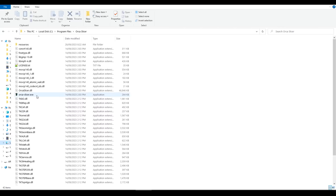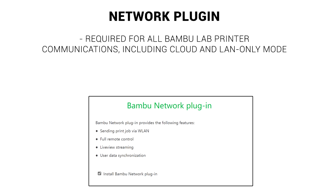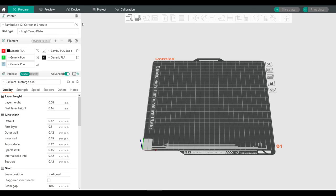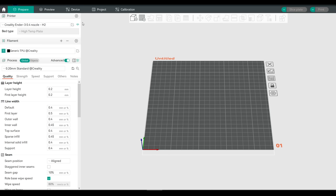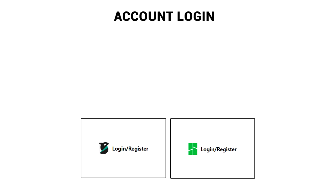With everything installed we can run OrcaSlicer for the first time. The first confusing prompt is the Bambu Network plugin. For a Bambu Lab printer, if you want to do anything over your network you're going to need this — whether you're using full cloud capabilities or LAN only mode. However, if you're using OrcaSlicer only for Marlin and Klipper printers, you won't need this plugin to use them over your local network. Without the plugin, if you have a Bambu Lab printer selected, clicking the device tab will do nothing. But for a Marlin or Klipper printer, clicking the device tab will load the web interface for that machine.